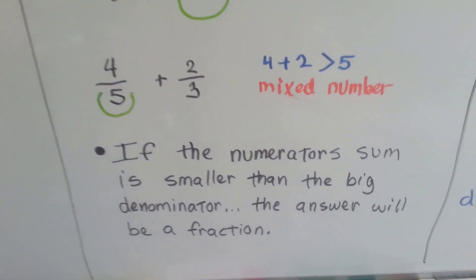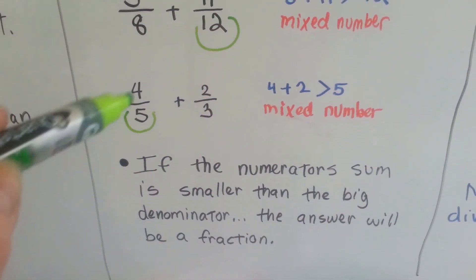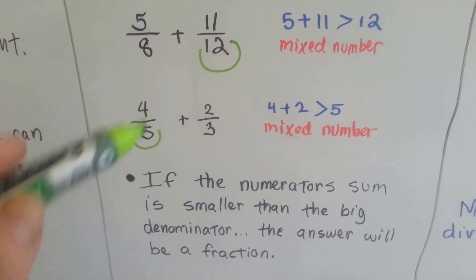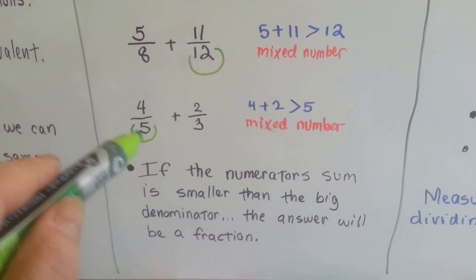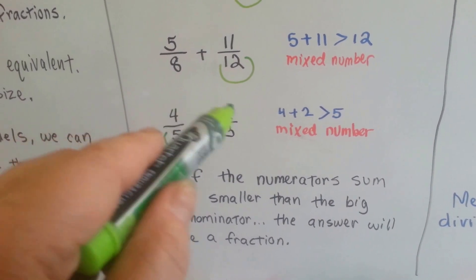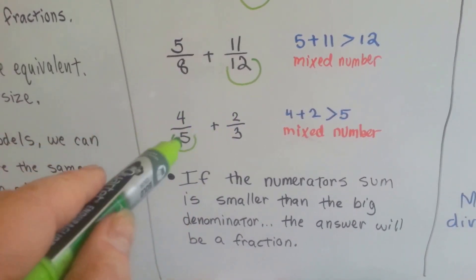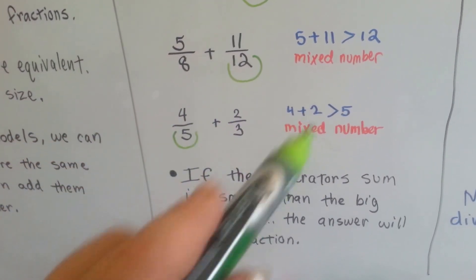If the numerator's sum is smaller than the biggest denominator, the answer will be a fraction. If it's bigger, if the numerators add up and the total is bigger than the biggest denominator, you know it will be a mixed number.